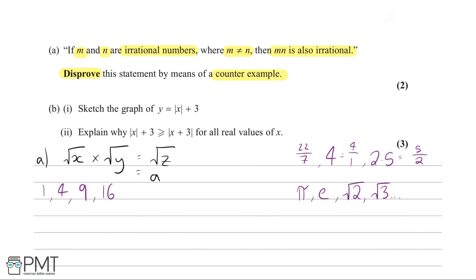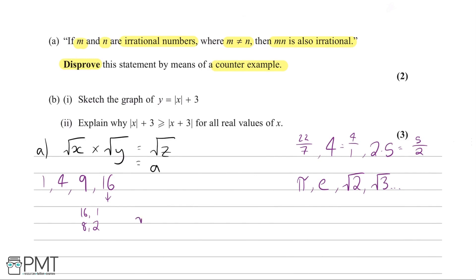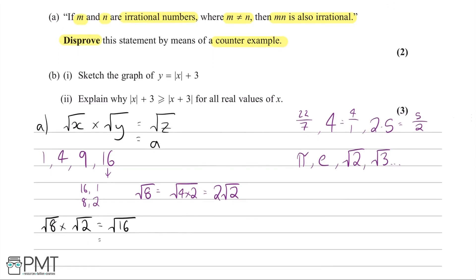We could use 16. The factor pair 16 and 1 doesn't work since both root 16 and root 1 are rational. So we use the factor pair 8 and 2. This works because both root 8 and root 2 are irrational. Root 8 simplifies to root 4 times root 2, which is 2 root 2. So, root 8 times root 2 equals the square root of 16, which is 4 — a rational number.